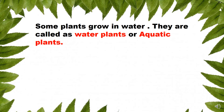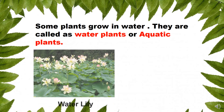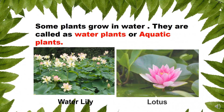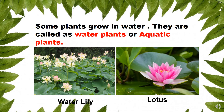Some plants grow in water. They are called water plants or aquatic plants. For example, water lily and lotus.